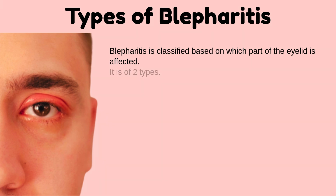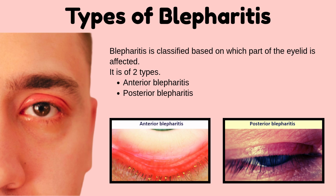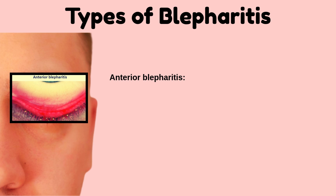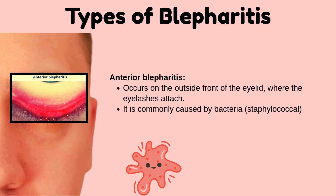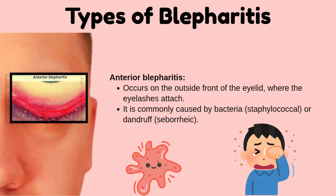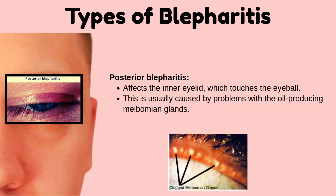Blepharitis is classified based on which part of the eyelid is affected, into two types: anterior and posterior. Anterior blepharitis occurs on the outside front of the eyelid where the eyelashes attach, and is commonly caused by bacteria (staphylococcal) or dandruff (seborrheic). Posterior blepharitis affects the inner eyelid which touches the eyeball, and is usually caused by problems with the oil-producing meibomian glands.